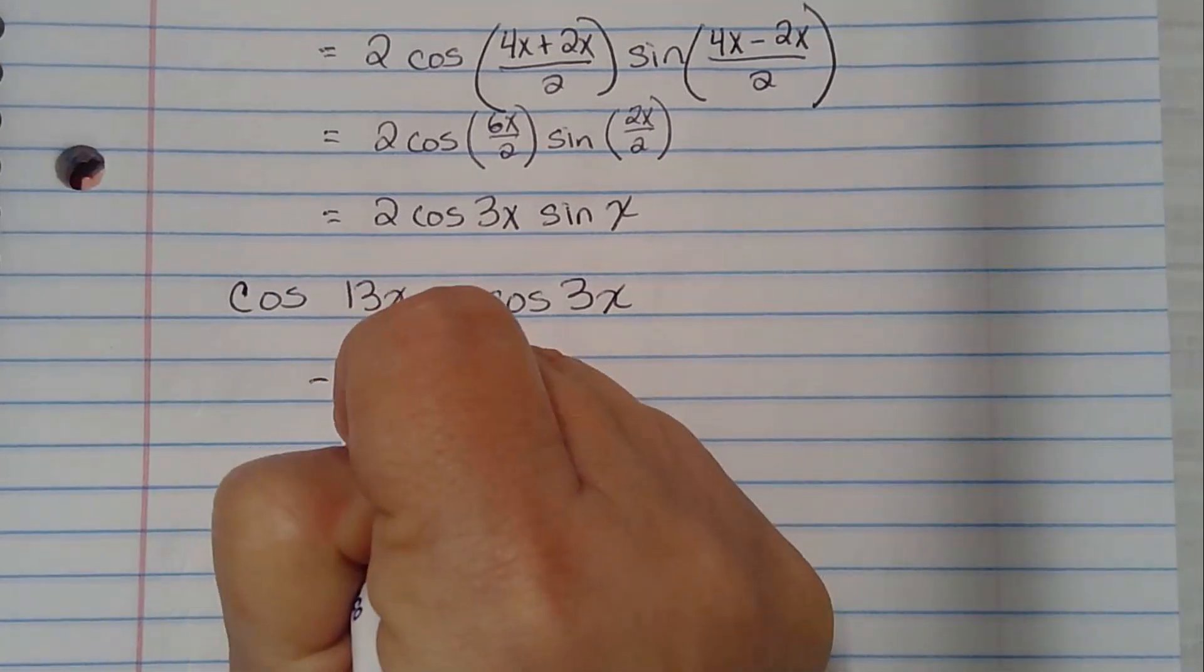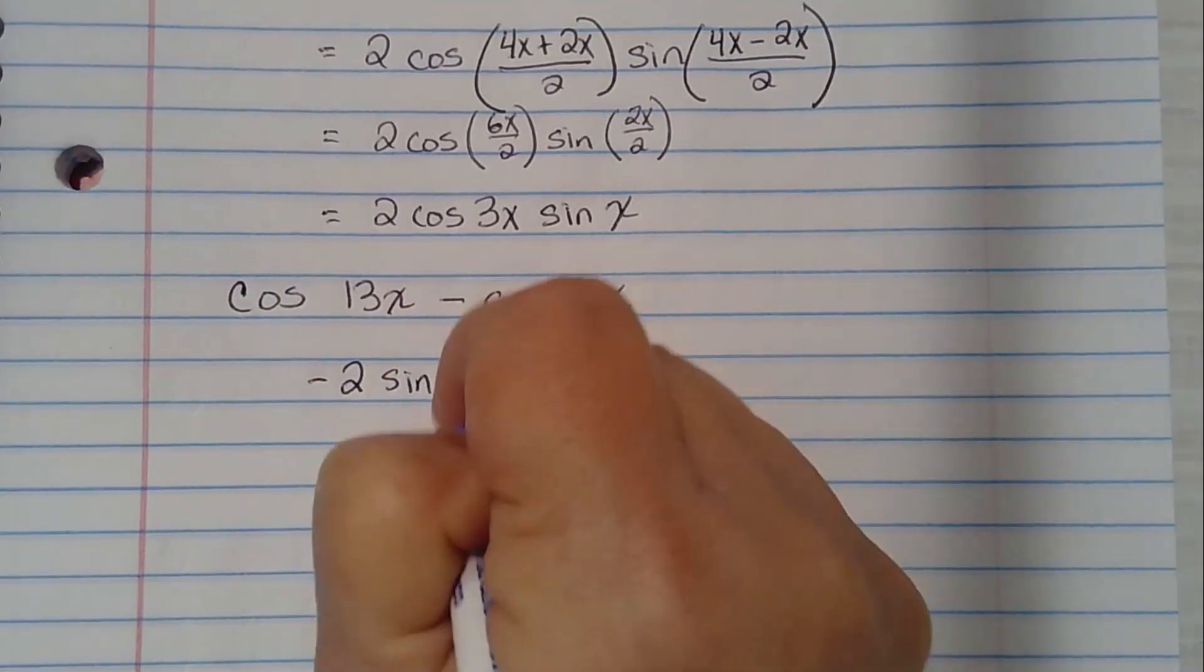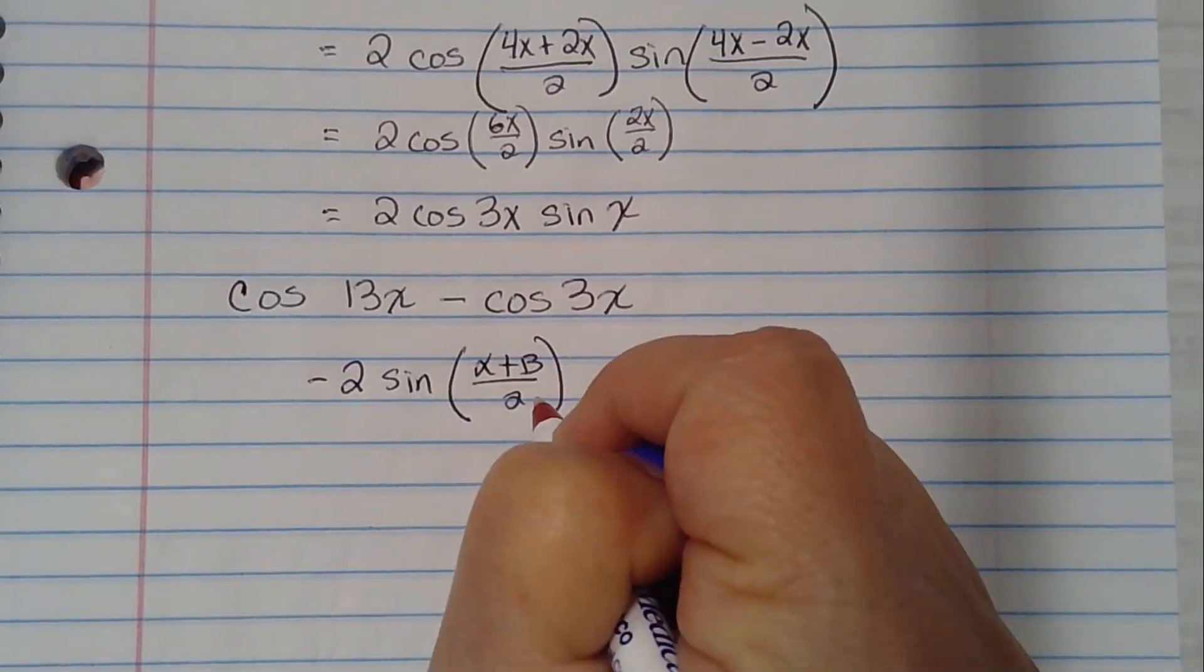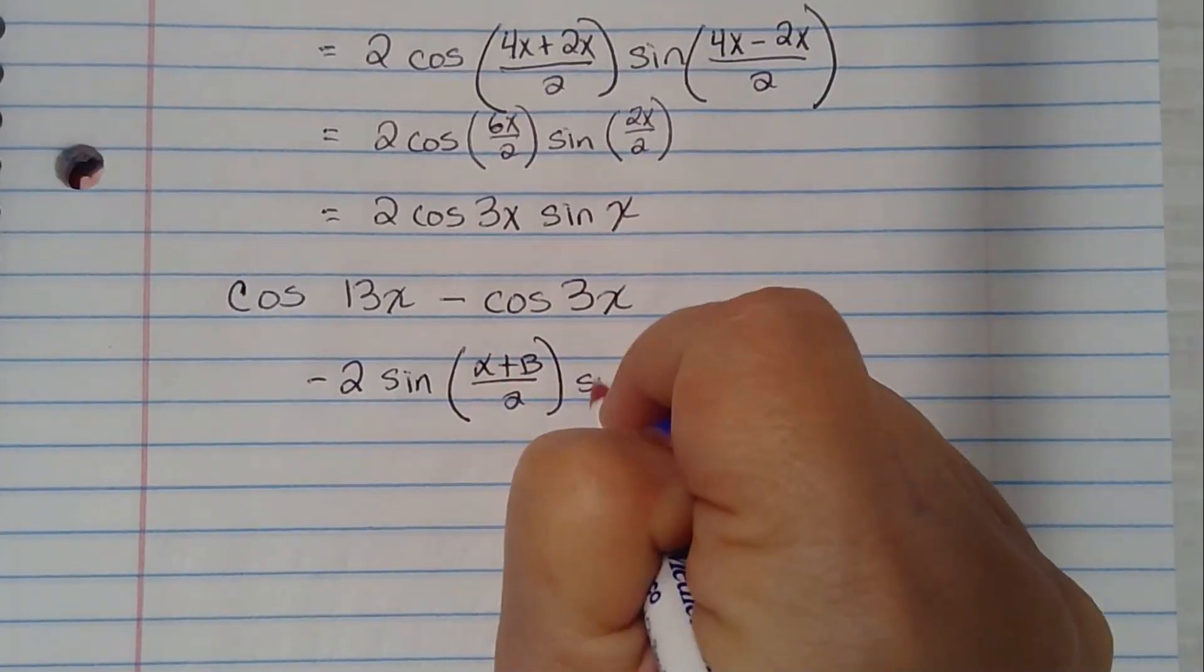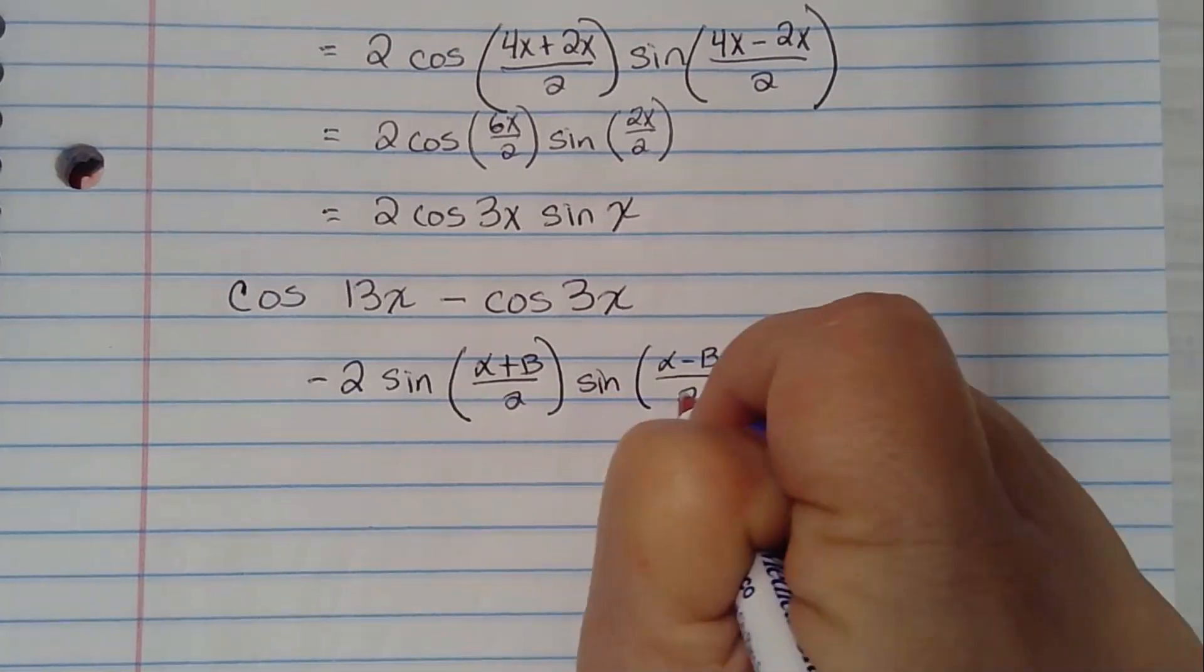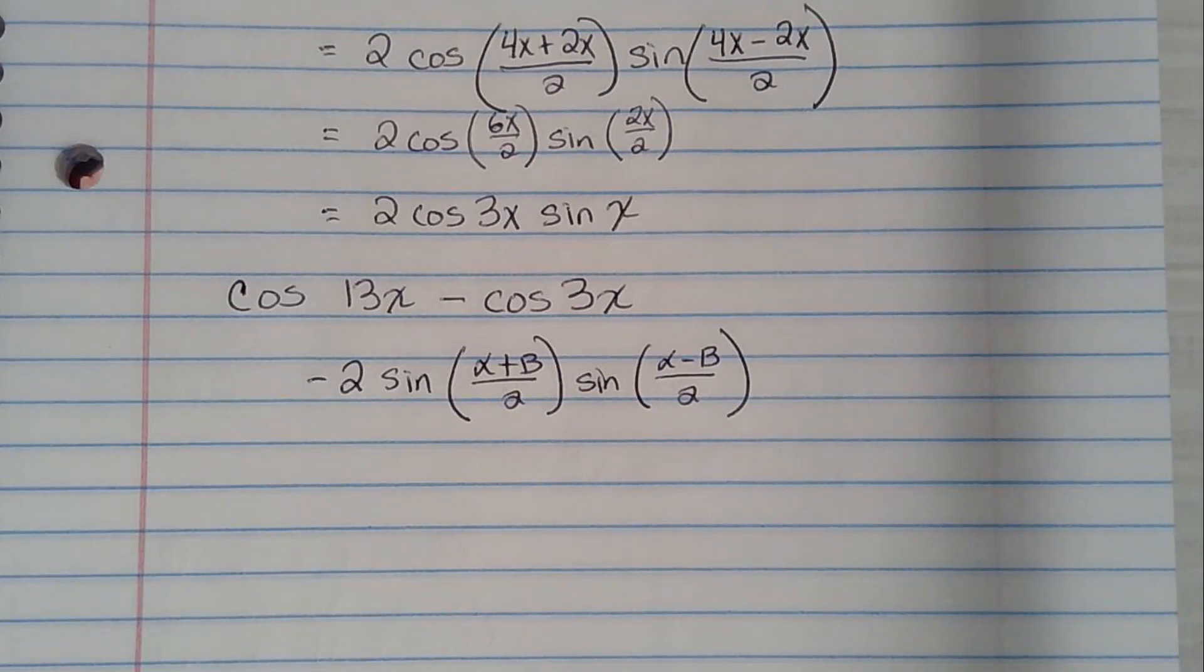So we're going to write that down. Minus 2 sine parentheses alpha plus beta over 2. Sine parentheses alpha minus beta over 2. Okay. So some things to watch out for. See, this one had a negative 2. The other formula had a positive 2. So you have to be careful that you are using the correct formula because they're all very similar, but they have these little differences.